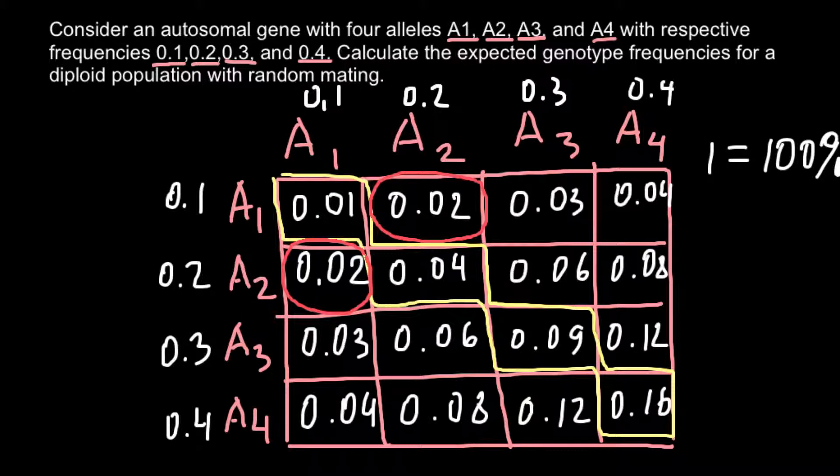You have to understand that the frequency of the allele A1A2 would be not 0.02, but we have to combine these two numbers, because combination A1A2 equals the combination A2A1.